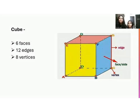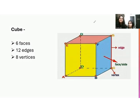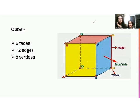Can you give us some examples of objects that resemble the shape of a cube? The Rubik's cube is also a cube. Right, so this is a cube structure. And some more examples? Like a gift box. Yes, a gift box is also a cube shape. Correct.